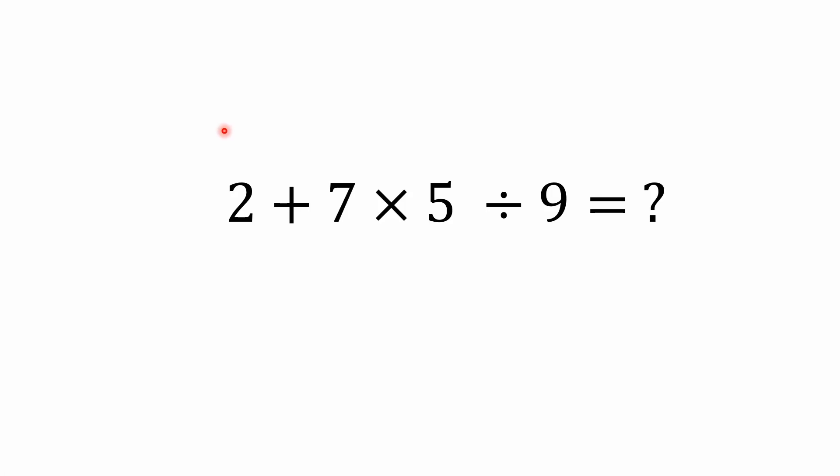Hello everybody and welcome back to the Math Puzzle Crash Course. We have another mixed operations problem featuring the order of operations. In this mixed operations problem we have addition, multiplication, and division. It's 2 + 7 × 5 ÷ 9 equals what?